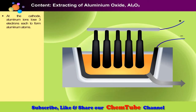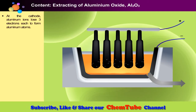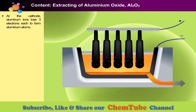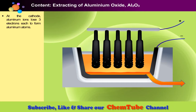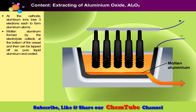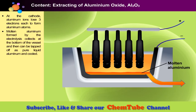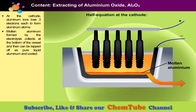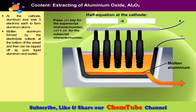As the electric current flows, aluminium ions move towards the cathode and gain three electrons each to become aluminium atoms. Molten aluminium formed by the electrolysis collects at the bottom of the vessel. The half equation at the cathode is: Al³⁺ + 3e⁻ → Al.